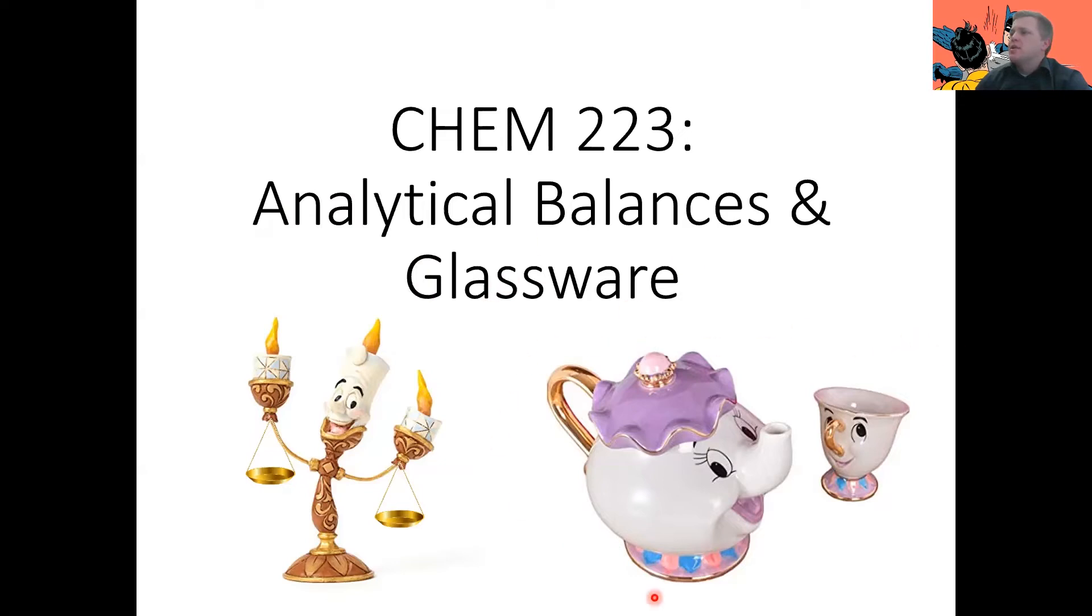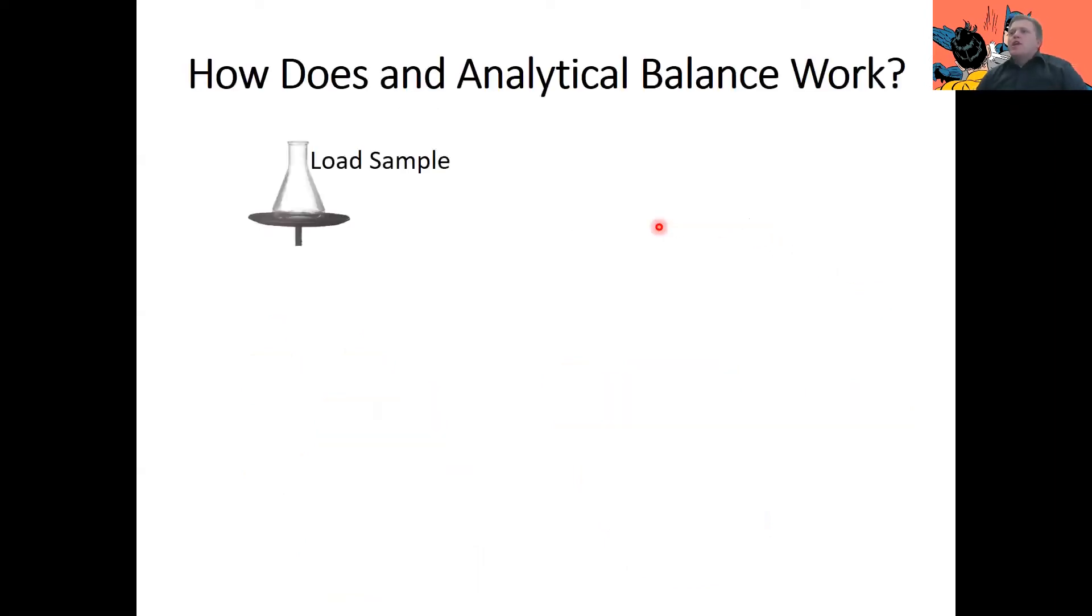On my slide here, I have some glassware from Beauty and the Beast. I have Mrs. Potts and Chip, her son. And of course, I have a balance over here. But what I'm hoping some of you didn't notice is that Lumiere here is not really a balance. He is a candlestick, and I added these balances myself. I'm pretty proud of that. All right, we're going to start off with analytical balances and learn how an analytical balance works.